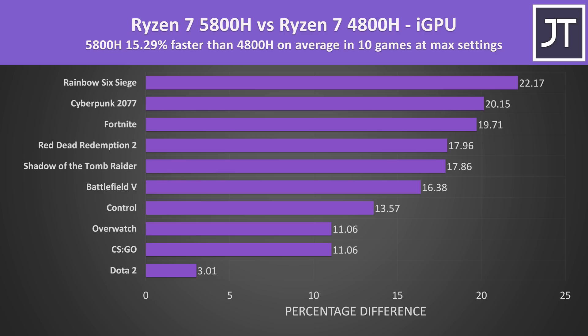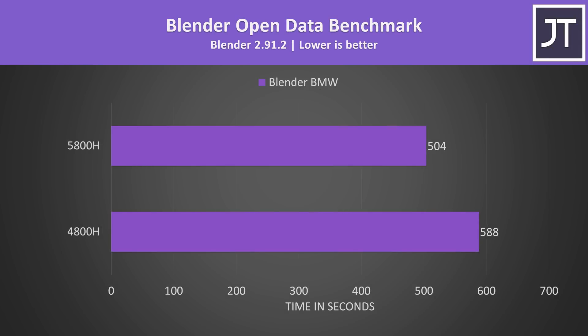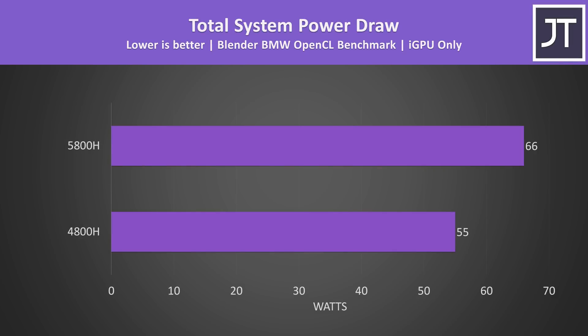This is about expected when we consider that the jump from 7 to 8 GPU cores is a 14% change. Outside of gaming, I've also tested the Blender Open Data benchmark with the BMW test using OpenCL with the integrated graphics — the 5800H was around 16% faster, a similar margin to what we saw in the majority of games. I also measured total system power draw from the wall while the Blender test was running; the 5800H system was using 20% more power, though these results can't be perfectly compared as there are other hardware differences between these laptops.